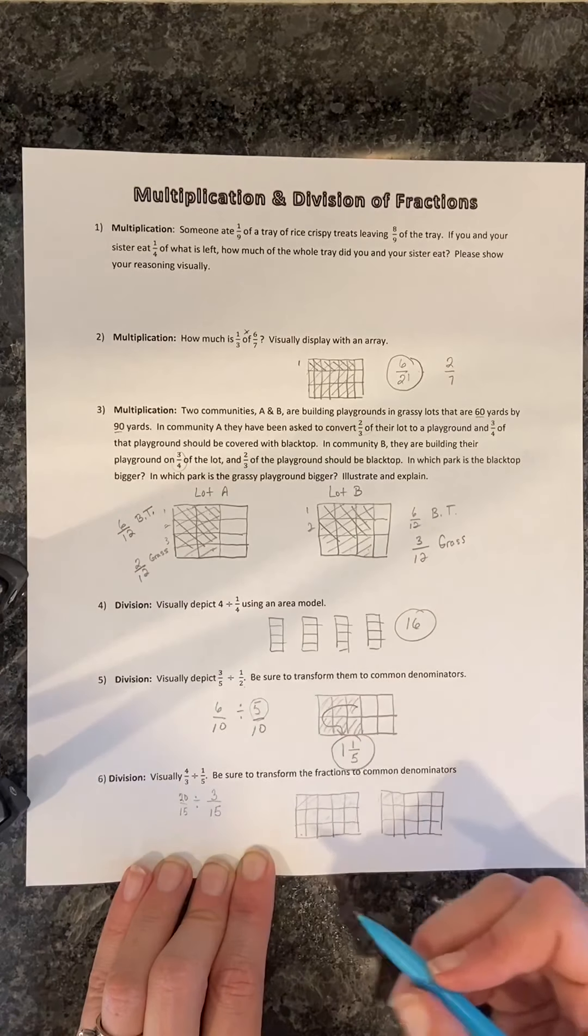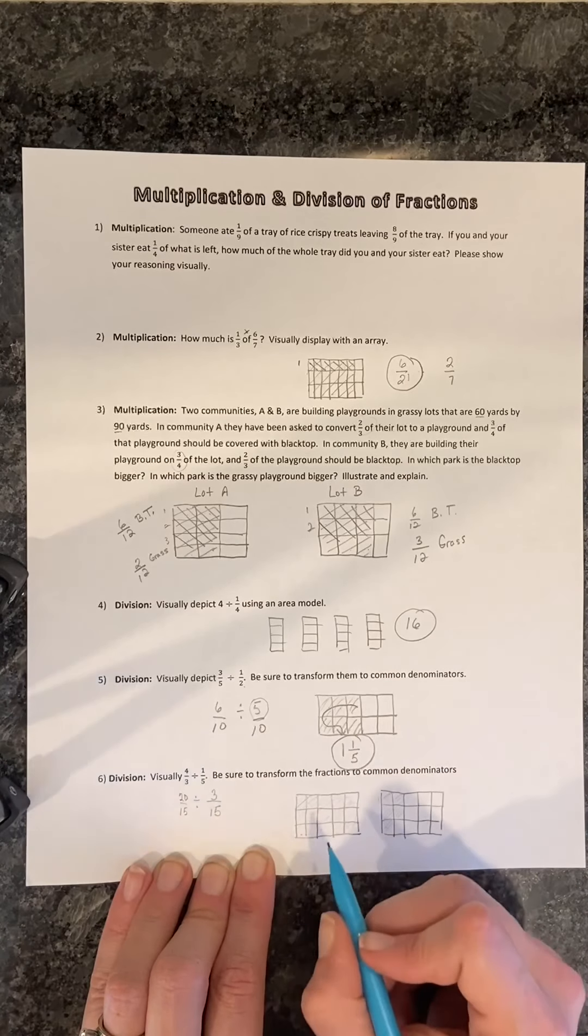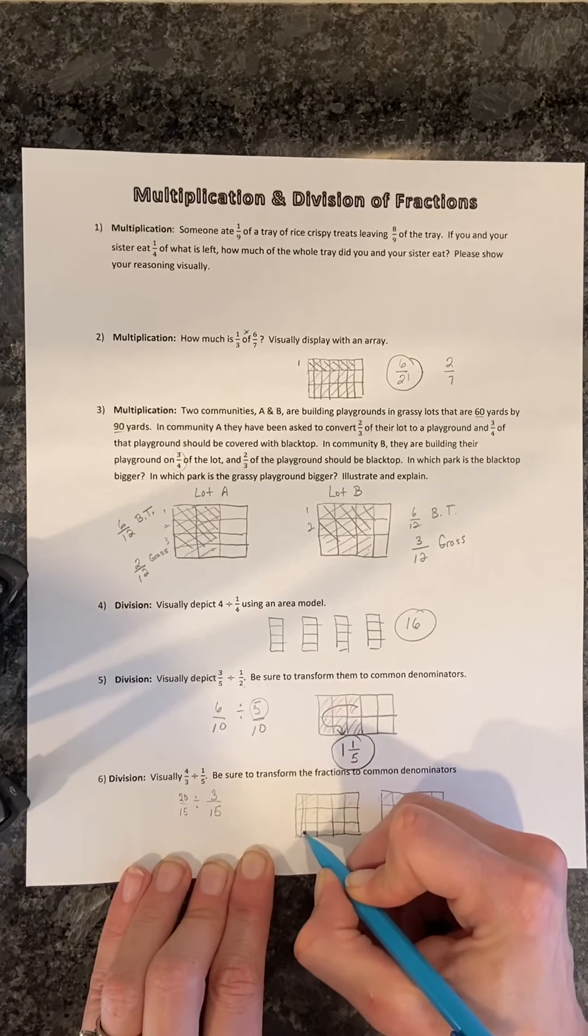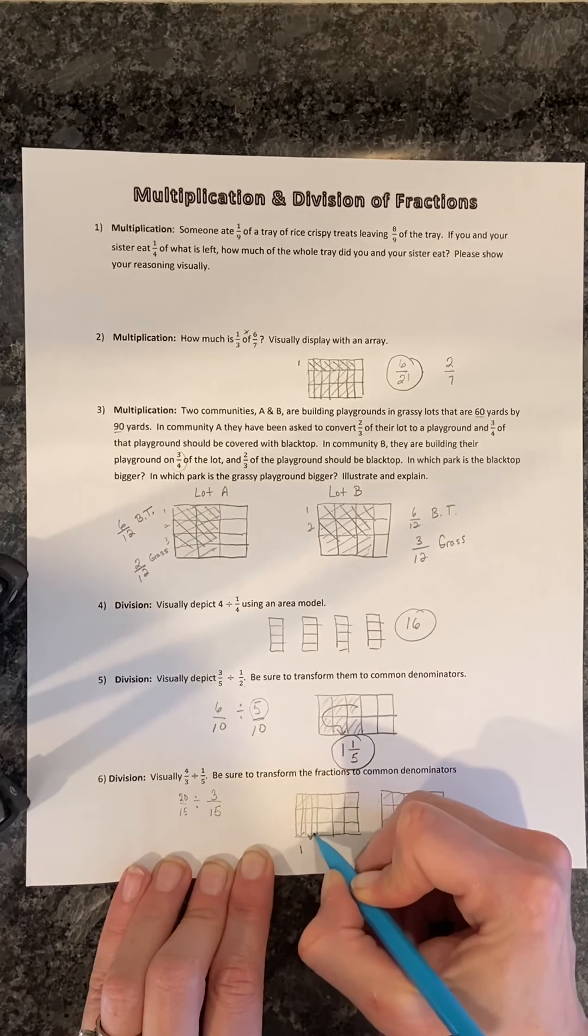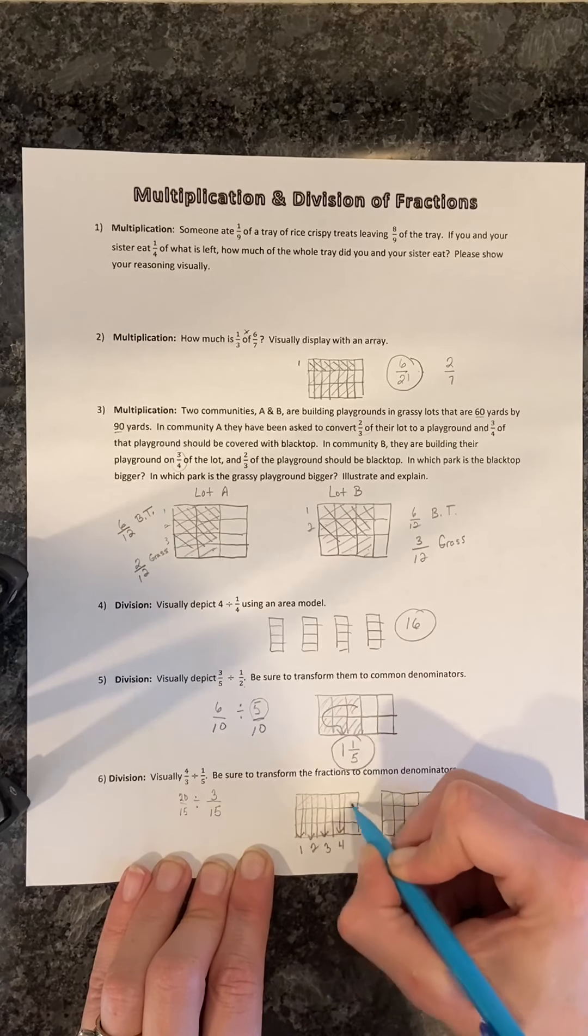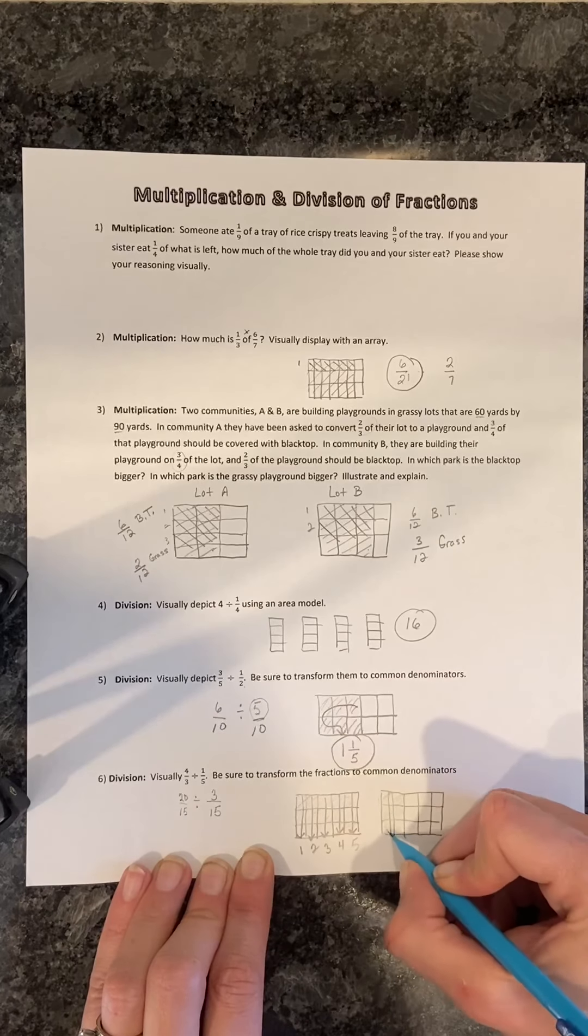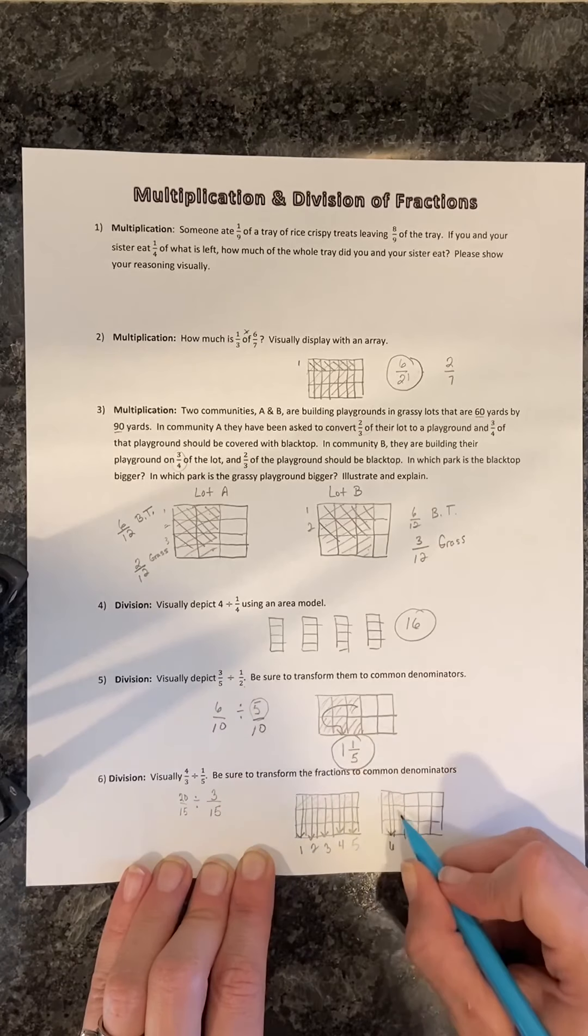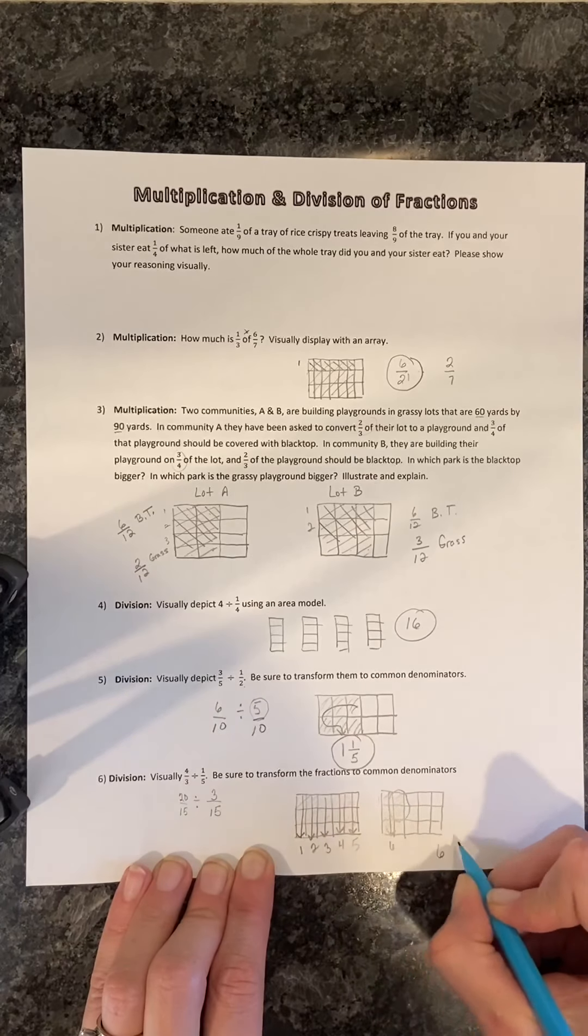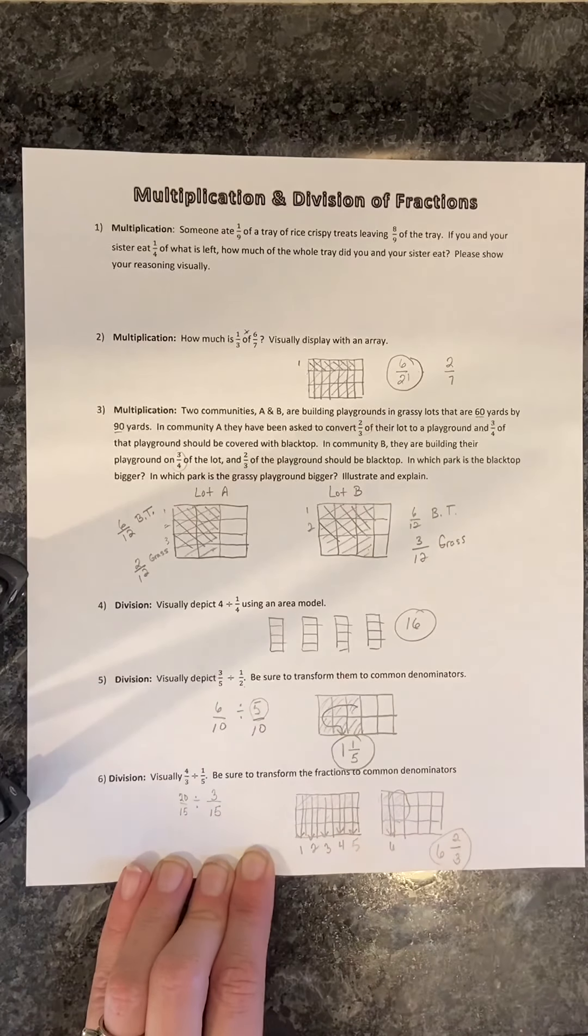Okay, so we're counting how many 3-fifteenths fit into here, and we know this is already divided into 15, so we're just counting in terms of threes. We fit one set of 3-fifteenths, a second set, a third set, a fourth set, a fifth set, a sixth set, and we can't fit anymore. We have two left over. Two out of what? Well, we're counting in terms of threes. So we have six and two-thirds left over, and that is our answer.